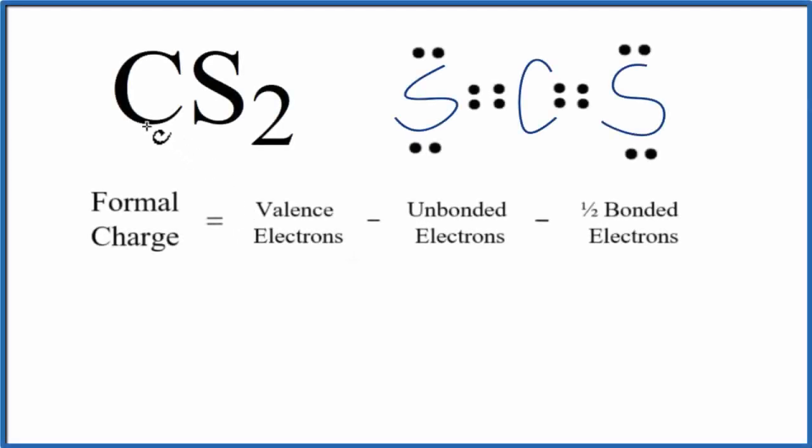To find the formal charge for each element in CS2, we'll use the Lewis structure here and then we'll use this formula. So part of the use of formal charges is to figure out which is the most likely or favorable Lewis structure.